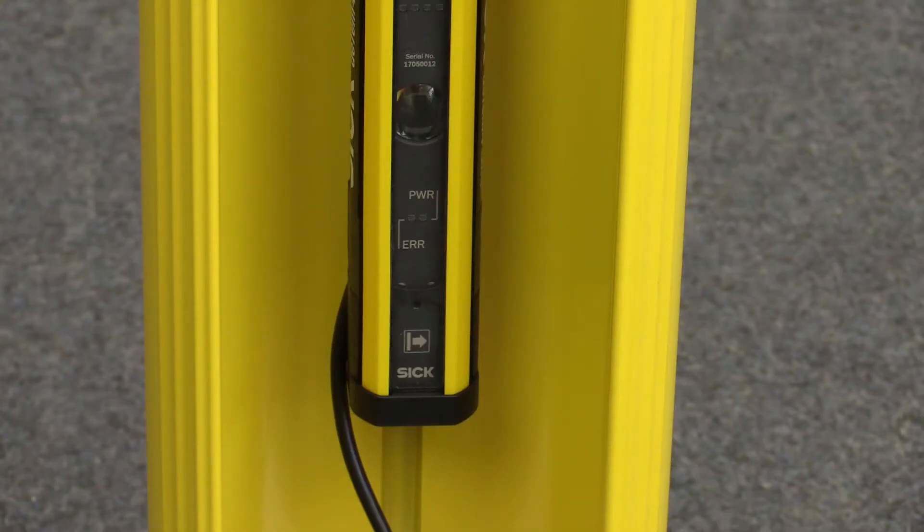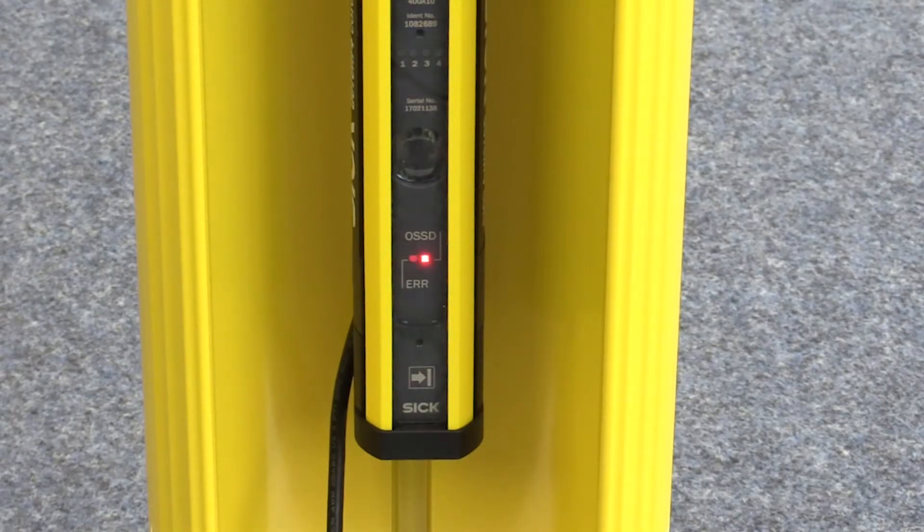Now we bring electric power on the system. The status indicator is red, the alignment LEDs are off. That means we have to align the system now.